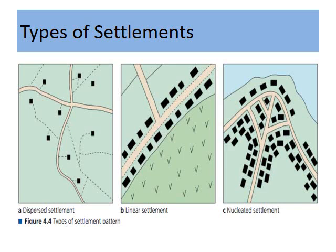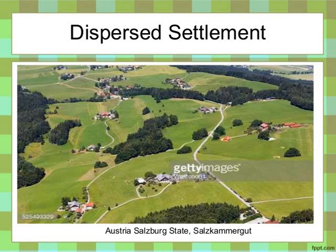The dispersed settlement is also known as scattered settlement. Houses or huts in this type of settlement are far apart from one another. On the map, such a settlement is indicated by long distances between houses. Areas of scattered settlement indicate sparse population and the absence of proper roads.